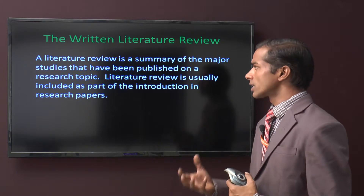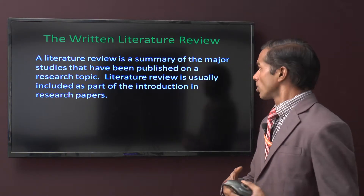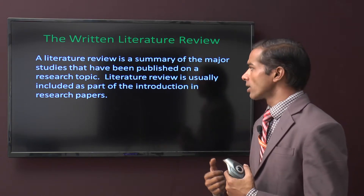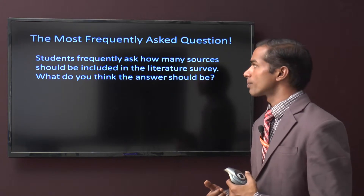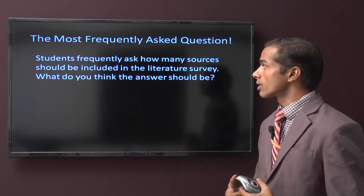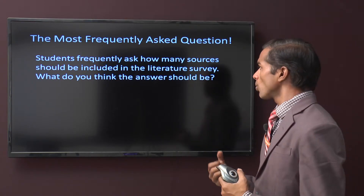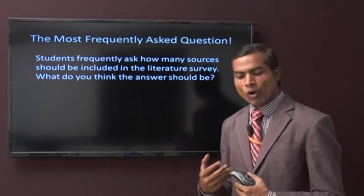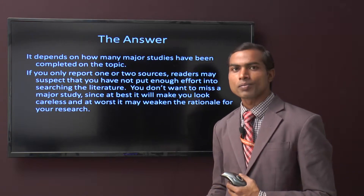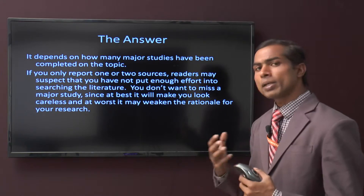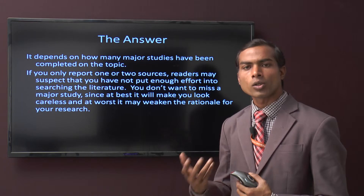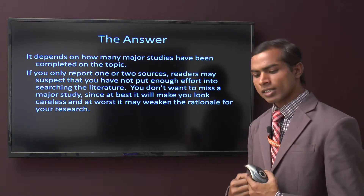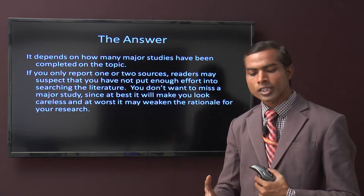A literature review is a summary of the major studies that have been published on a research topic that you are working on. It is usually included as part of the introduction in a research paper. A frequently asked question from students is: how many sources should be included in the literature survey? The answer is: it depends on how many major studies have been completed on the topic.